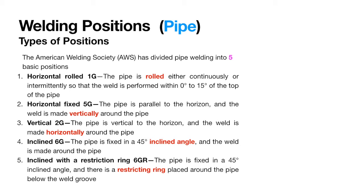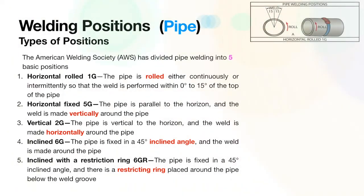Let's start with horizontal 1G. Horizontal 1G is also called flat position, with the pipe's axis horizontal and rolled during welding so that the weld metal is deposited from above. Basically, we are going to roll the pipe.